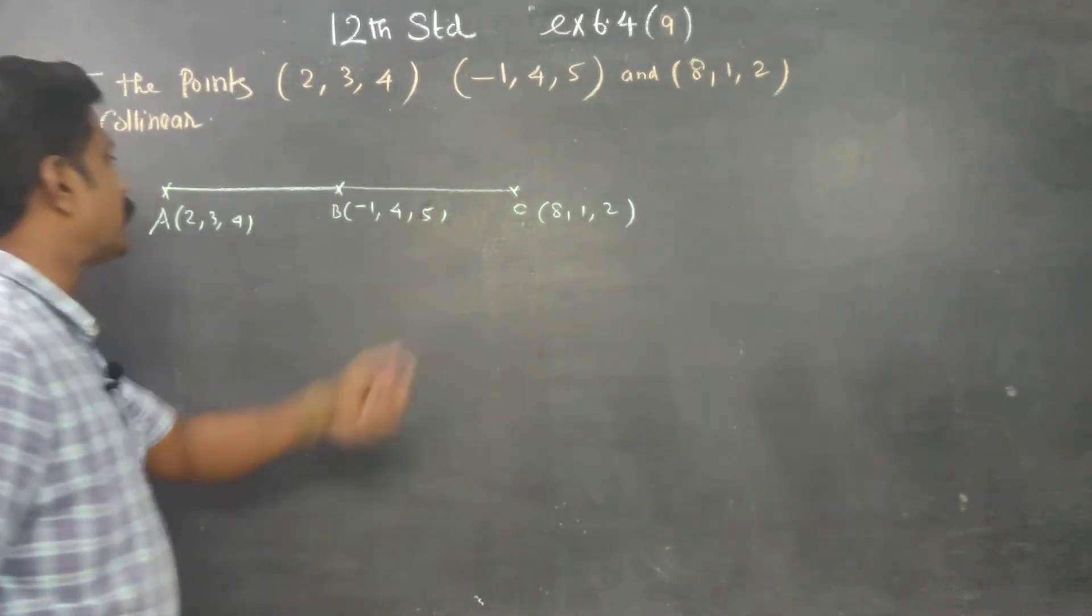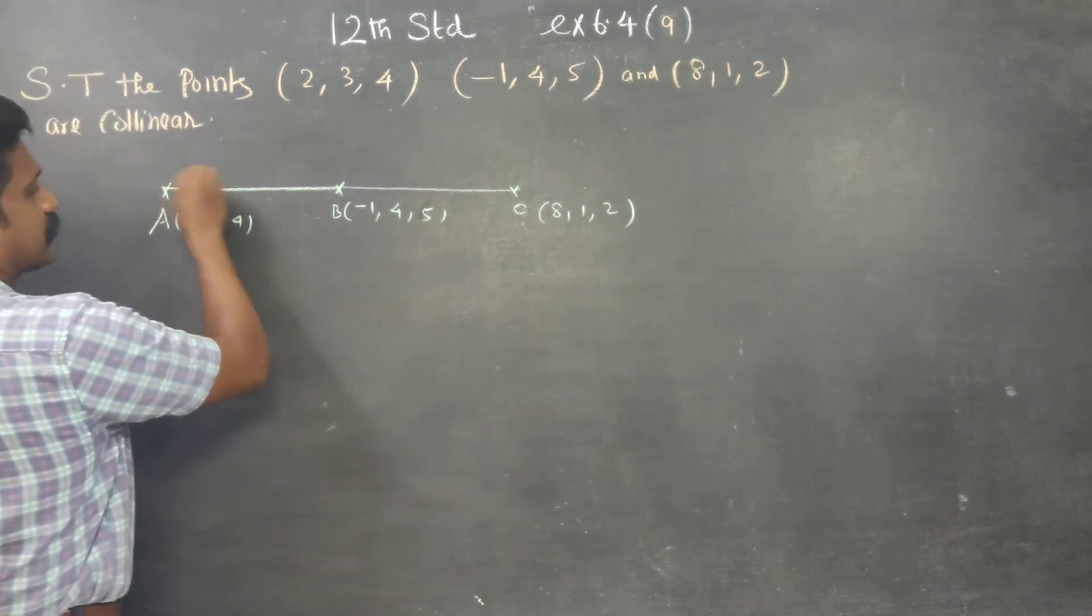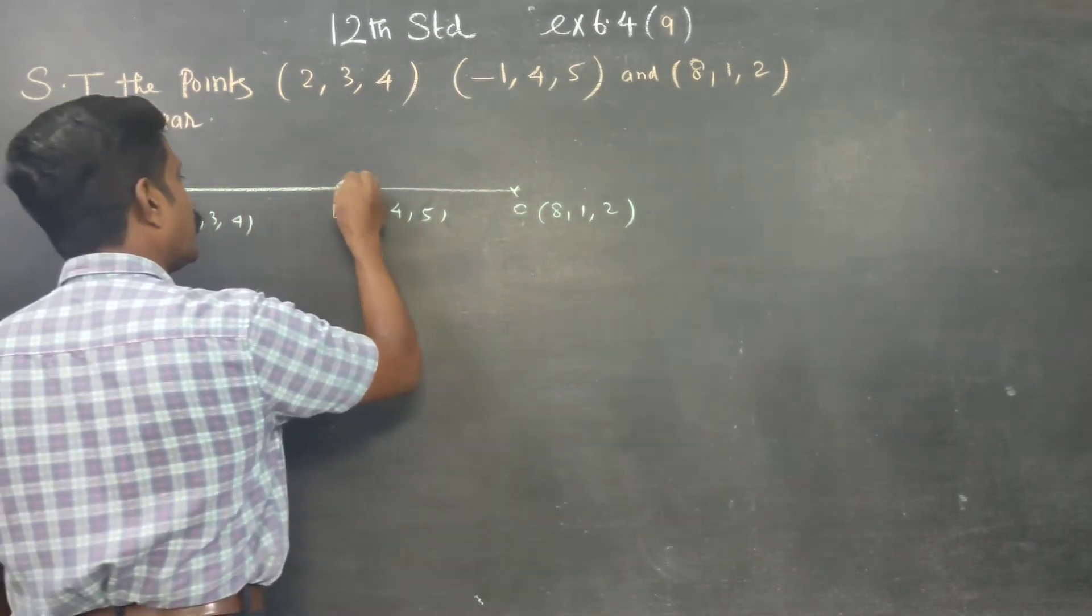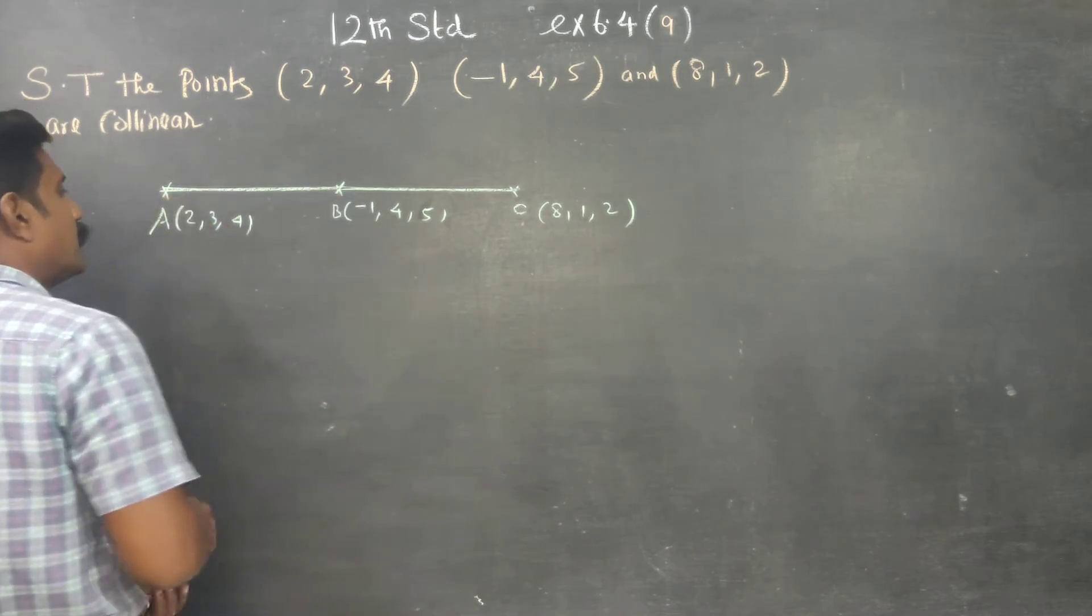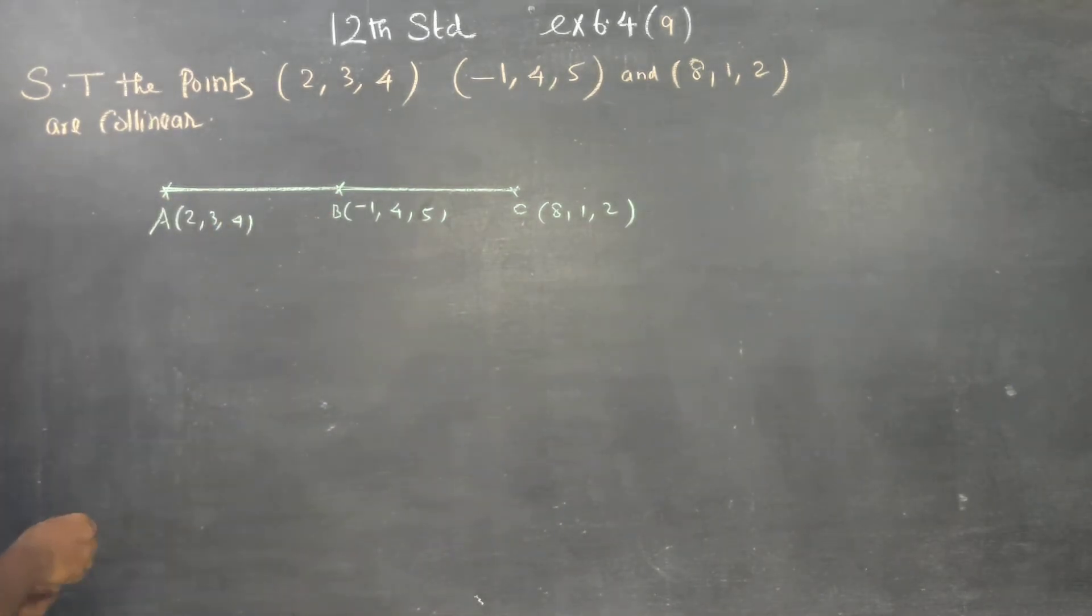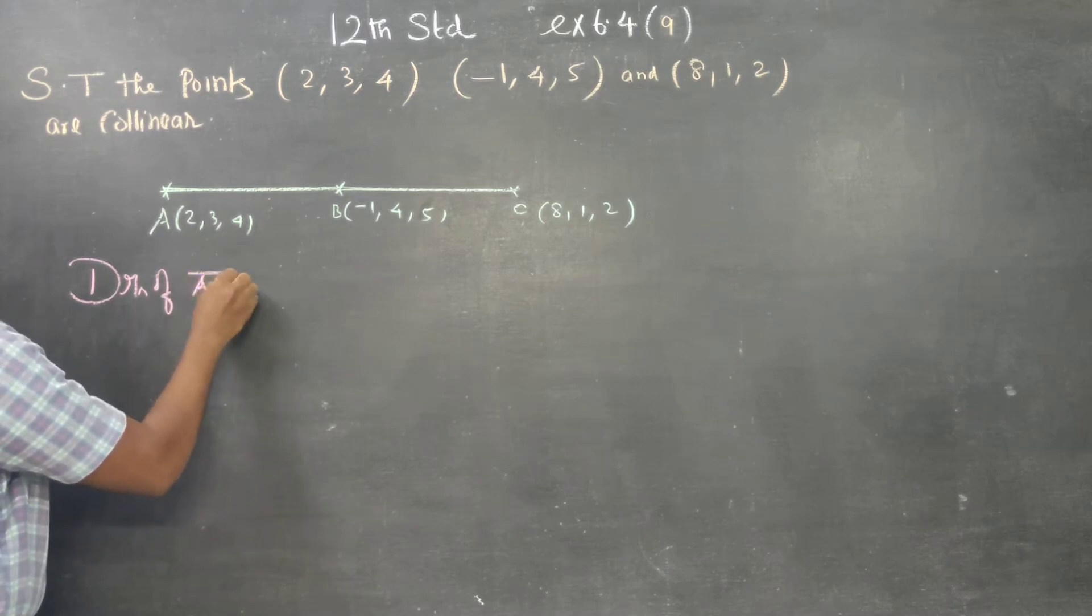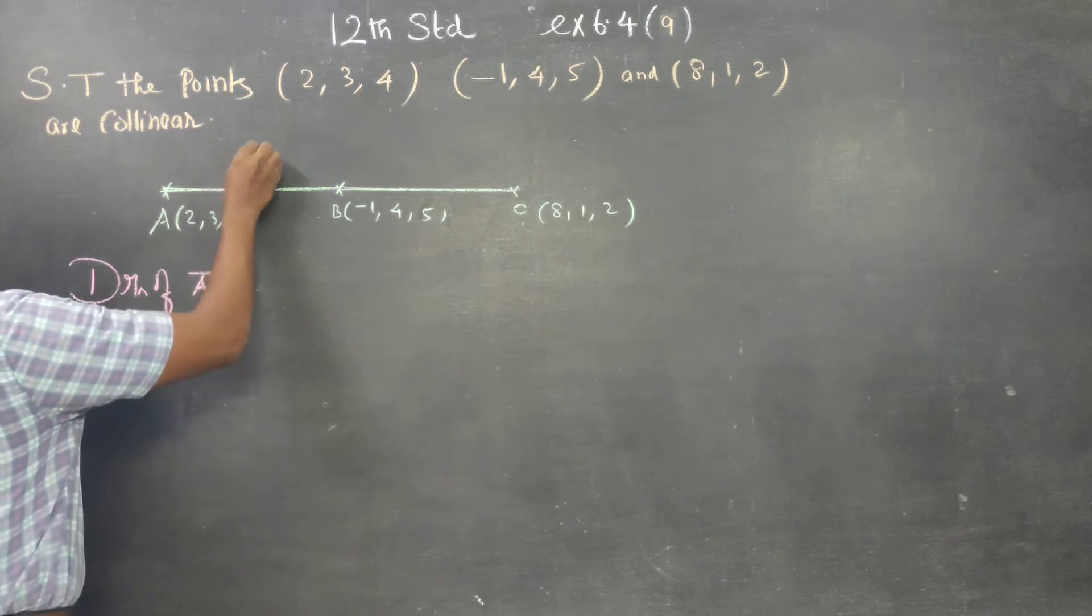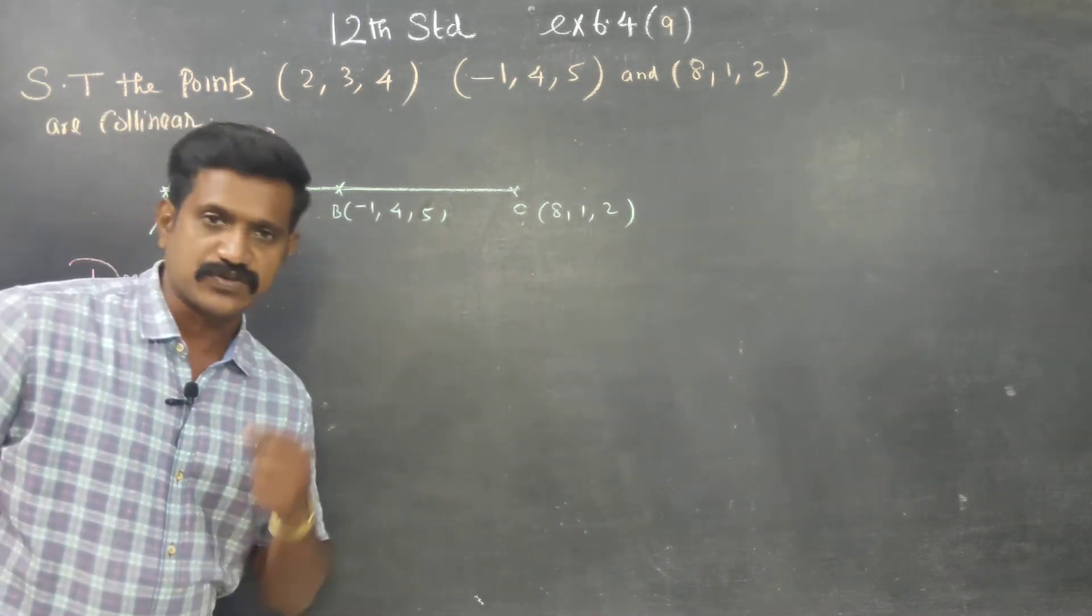I am just giving a diagrammatic representation, but the two lines AB and BC are collinear or parallel. I am going to find direction ratios of AB vector. Direction ratios of the line number 1. This is the first line. Let it be B vector, direction ratios be B vector.